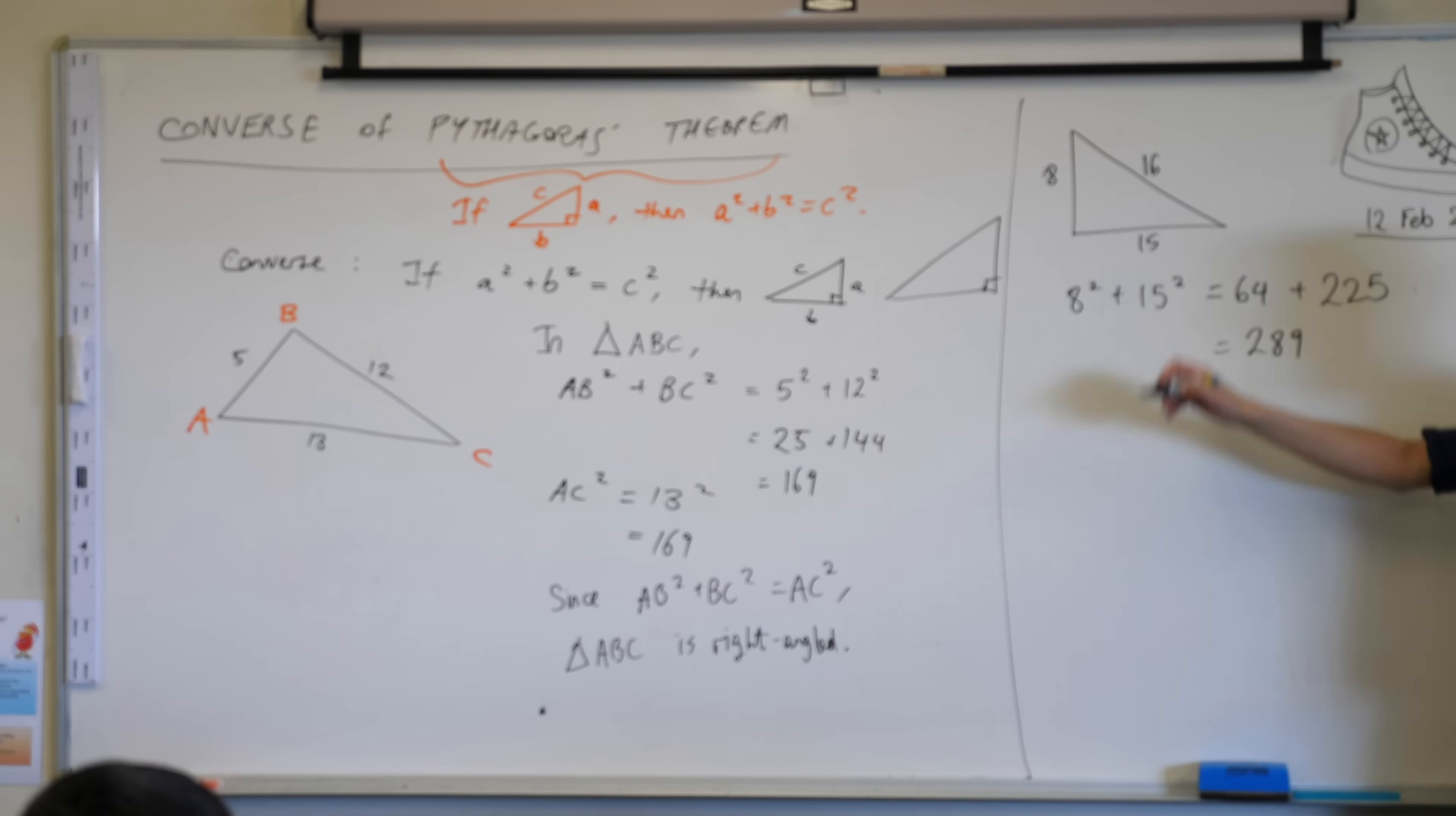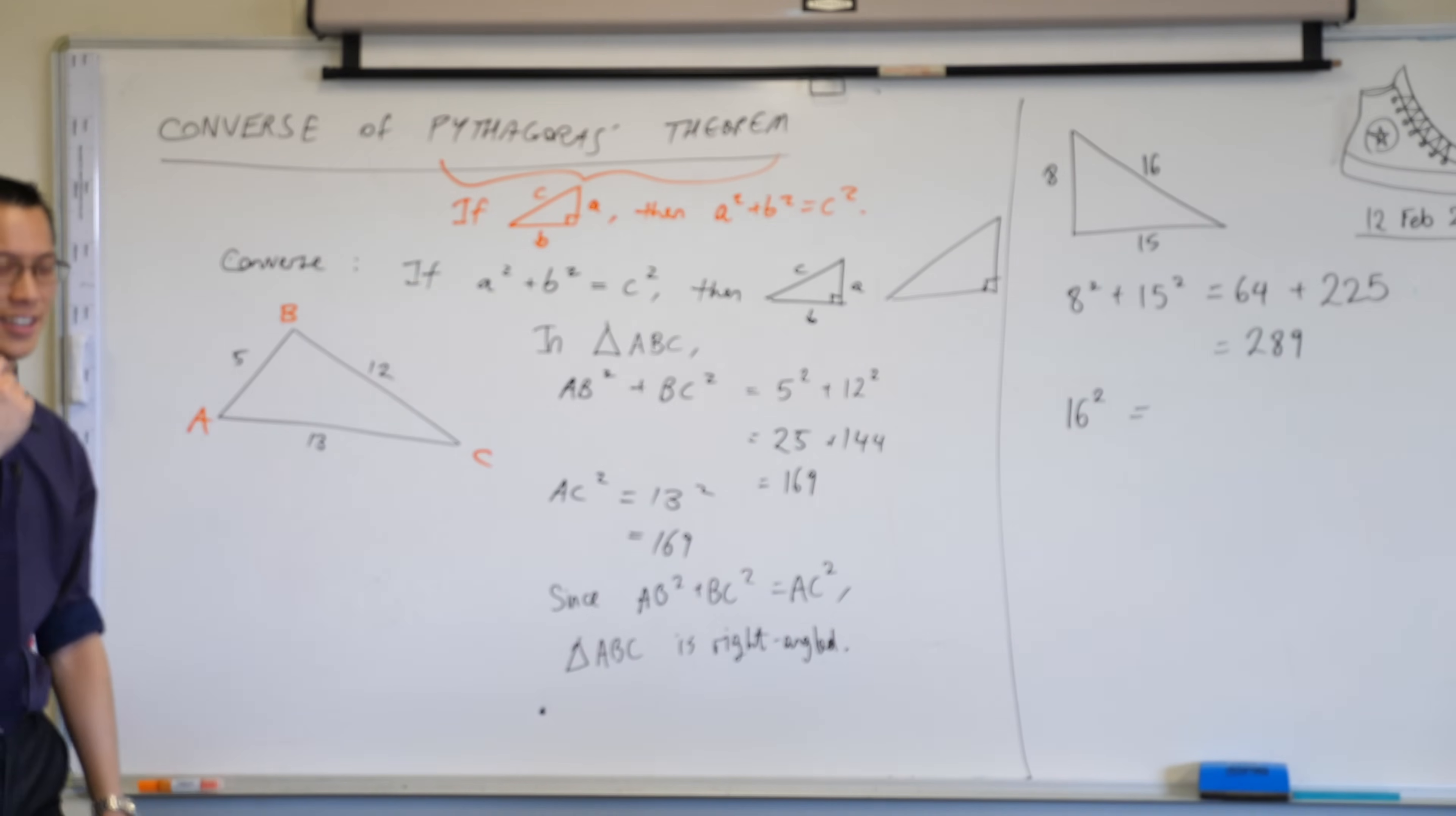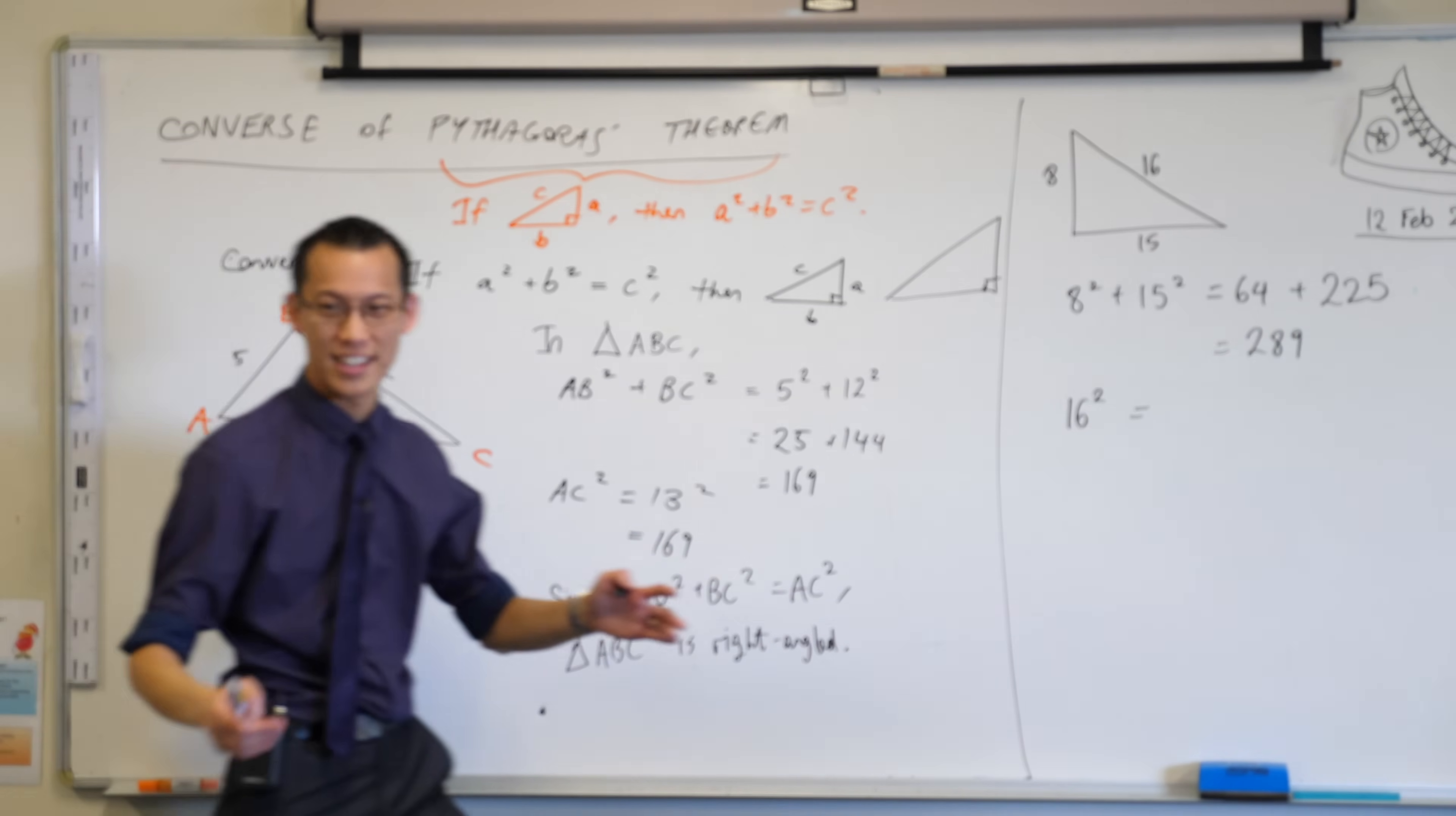We're going to have a look at the longest side now. That's 16 squared. This one is less common. But if you're a computer nerd like me, you know numbers like this because they're powers of 2. 16 squared. Does anyone know what 16 times 16 is?